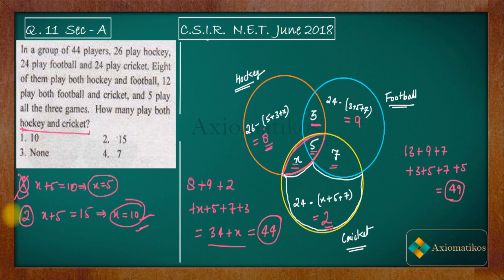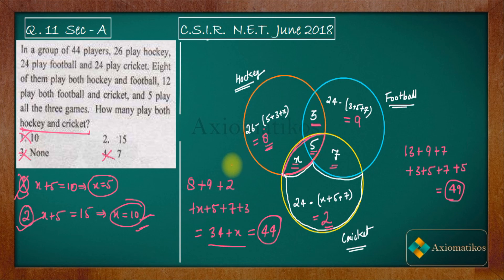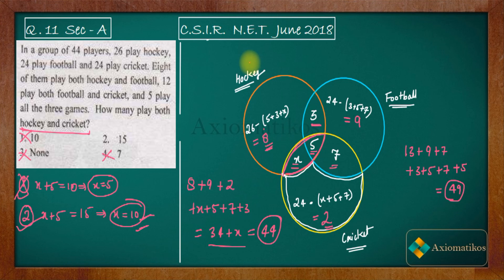The second option is correct, so the third and fourth options are incorrect. This is how you solve this problem — it's straightforward once you set up the Venn diagram. If you have any doubts, ask in the comment section, or join our WhatsApp and Telegram groups whose links are in the description.